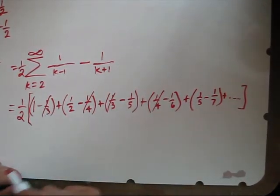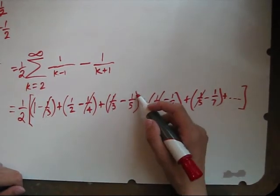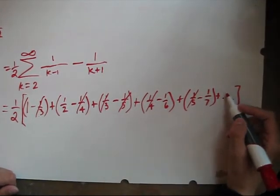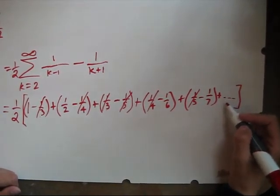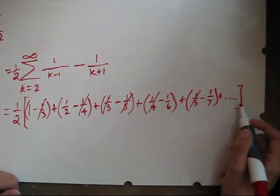We have a negative 1 fifth, positive 1 fifth, that's gone. We have a negative 1 sixth here. Our next term, if we would have written it, would have had a 1 sixth, and so that would have been gone. Everything here on will cancel.